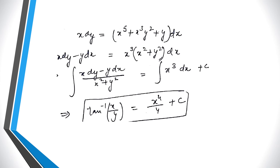One more example. We have to solve x dy equals x to the power 5 plus x cubed plus y squared plus y dx. We rearrange to get x dy minus y dx on the left, and we factor out x cubed from the remaining terms to get x cubed times (x squared plus y squared) dx. Dividing by x squared plus y squared, we recognize this as the complete differential of tan inverse (x/y). Here the right side is a function of x alone, so we can easily integrate both sides to get the solution.